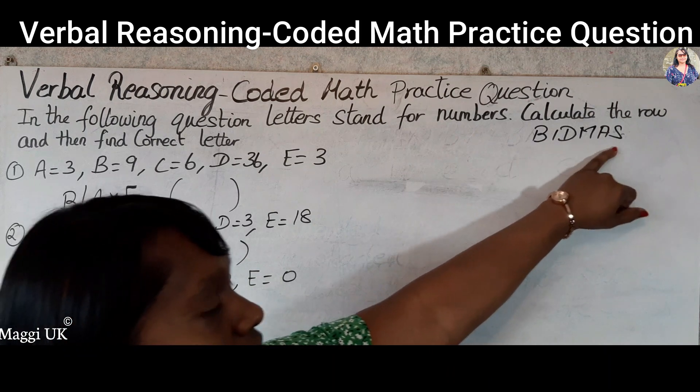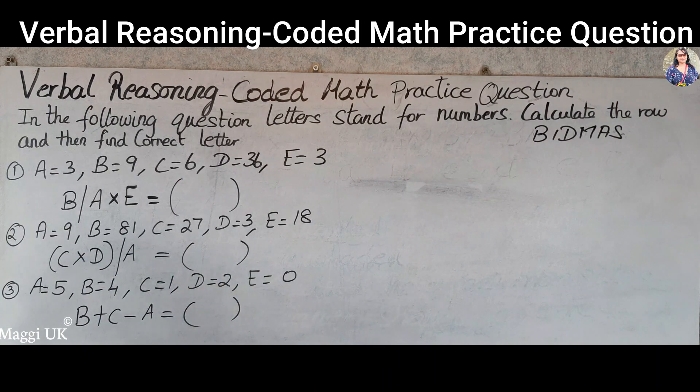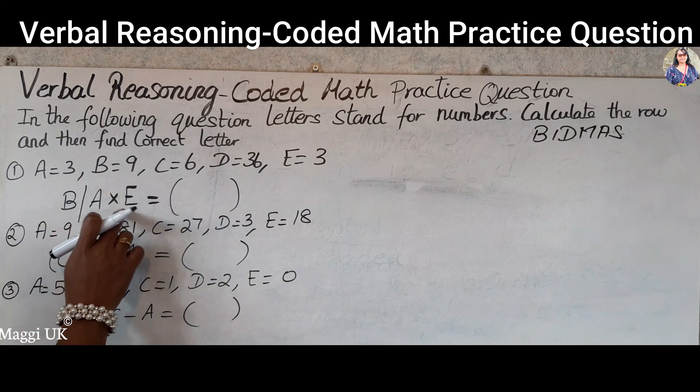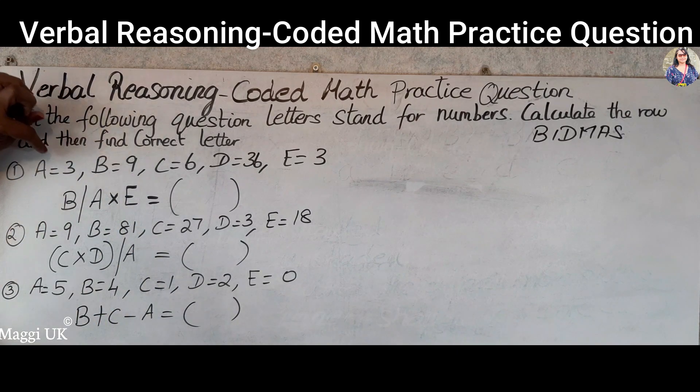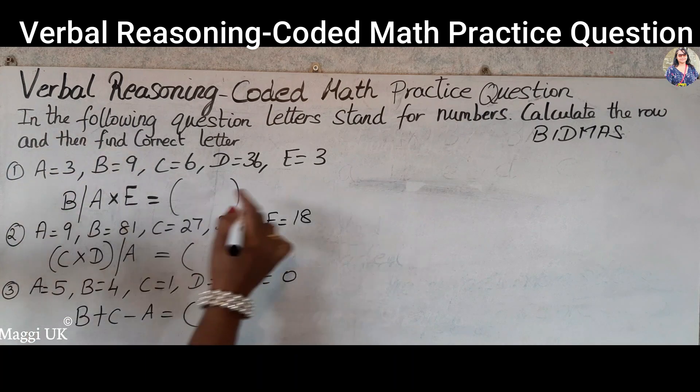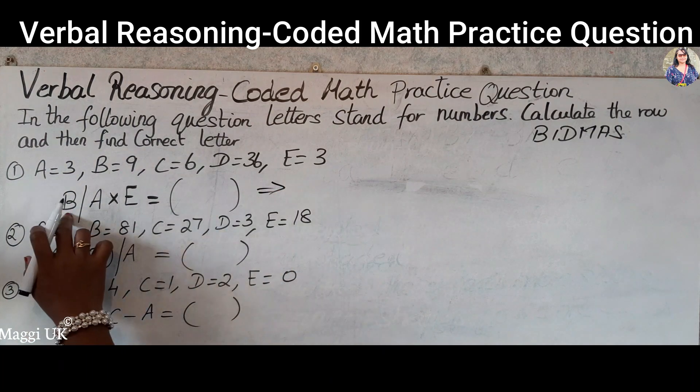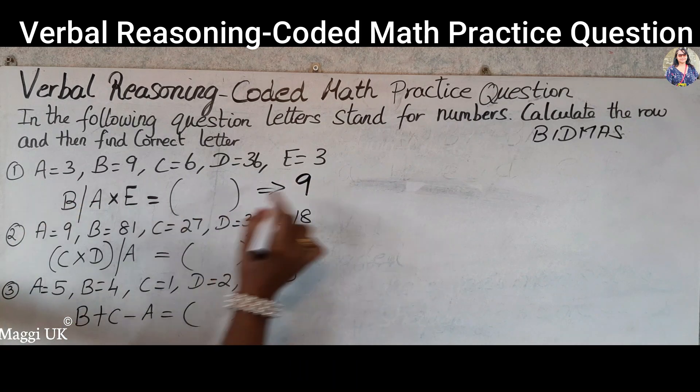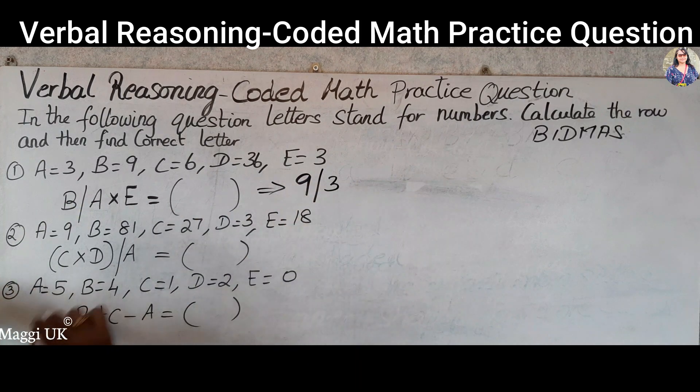So this is the equation: B divided by A times E. They have given a value for each one, so B is 9. We write down 9 divided by A, which is divided by 3, and then times by E, which is also 3.